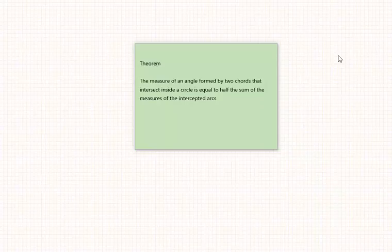Welcome. For this theorem, the measure of an angle formed by two chords that intersect inside of a circle is equal to half of the sum of the measure of the intercepted arcs. We are going to demonstrate that.